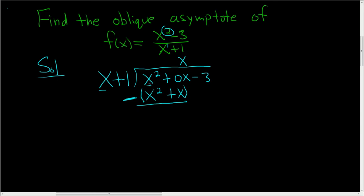And then add x squared plus negative x squared is 0. 0x plus negative x is negative x. And then you bring down the negative 3. Then you repeat the process.